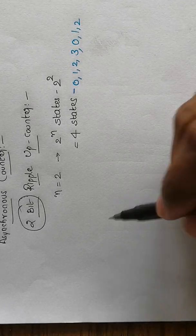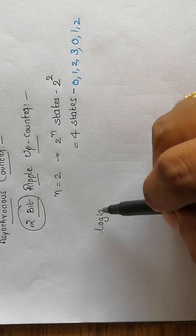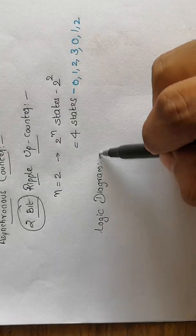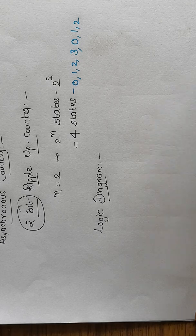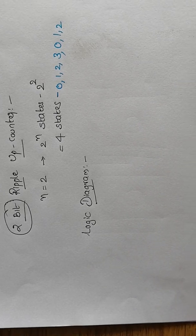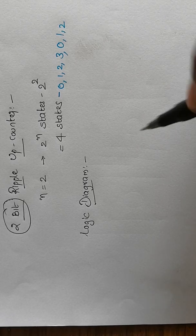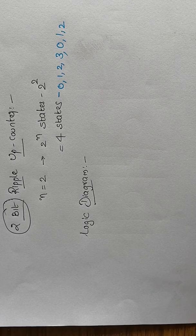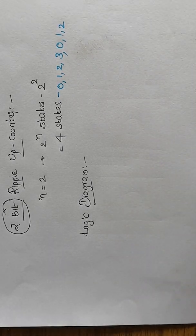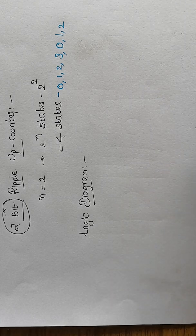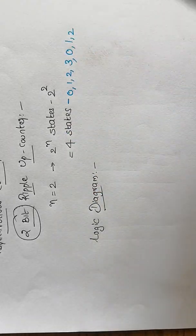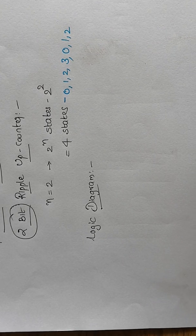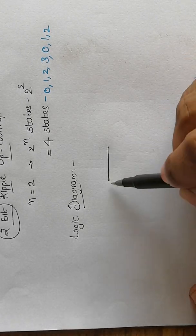Asynchronous counters are usually implemented using T flip-flops or JK flip-flops, and sometimes D flip-flops. Here I am using JK flip-flops for designing the 2-bit ripple up counter. To implement a 2-bit ripple up counter, we require 2 flip-flops.